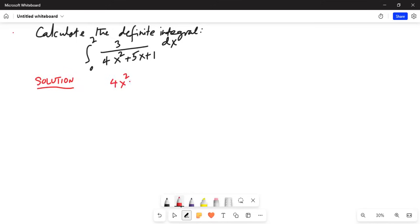4x square plus 5x plus 1 can be factored as 4x square plus 4x plus x. I'm splitting 5x into 4x plus x plus 1. From the first two terms I take 4x common and inside I get x plus 1 inside the parenthesis. From the last two terms I take 1 as a common factor, x plus 1 is left. This can be simplified as 4x plus 1 multiplication of two factors and x plus 1.